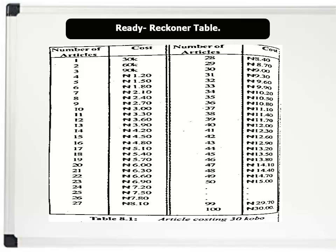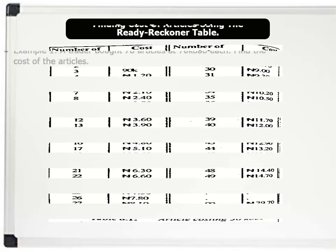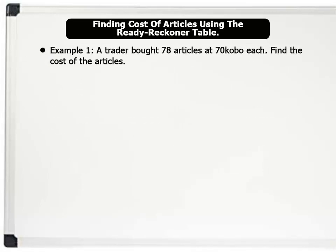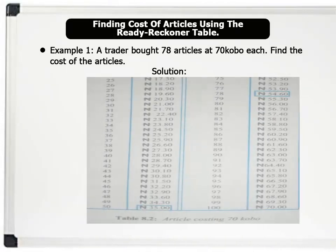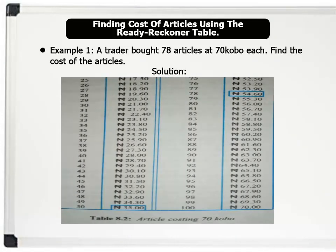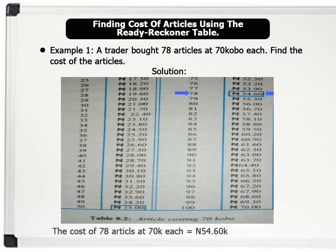Now let us find the cost of some articles using the Ready Reckoner table. Example 1: A trader bought 78 articles at 70 colbo each. Find the cost of the articles. Solution: Using a Ready Reckoner table for an article costing 70 colbo, we trace the number of articles, which is 78, and then the corresponding cost, which is 54 nara 60 colbo. So the cost of 78 articles at 70 colbo each equals 54 nara 60 colbo.